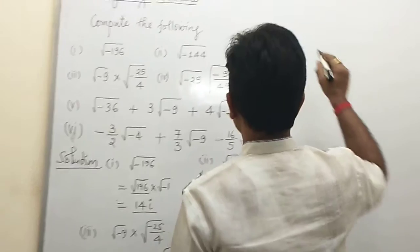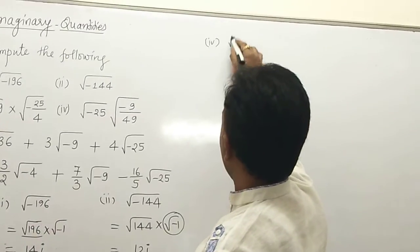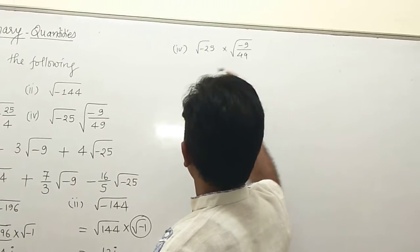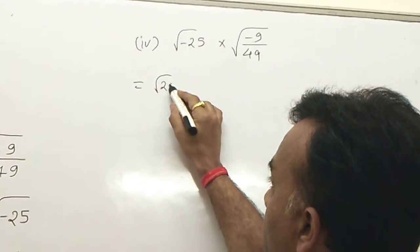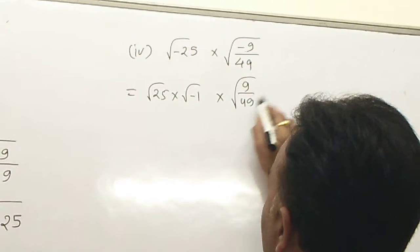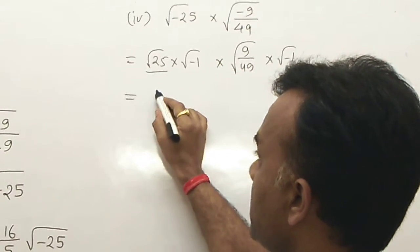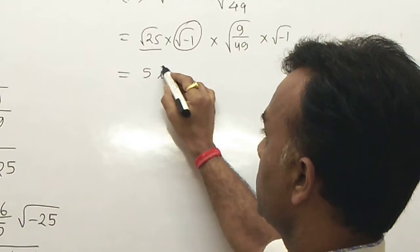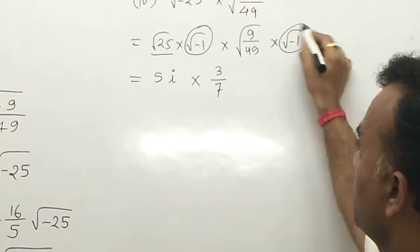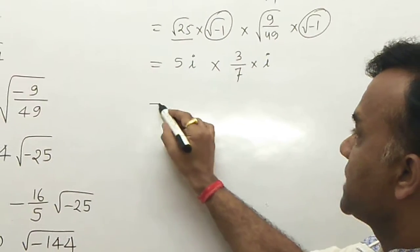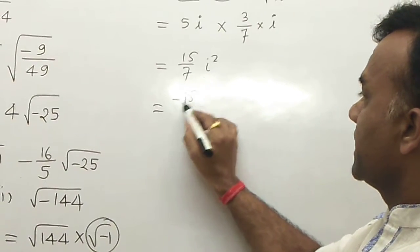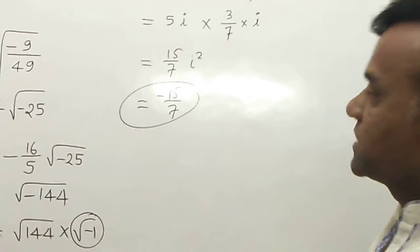Fourth example: √-25 · √(-9/49). Simplify √-25 = 5i, and √(-9/49) = (3/7)i. Multiplying: 5i · (3/7)i = (15/7) · i² = −15/7. Again the answer is a real number, −15/7.